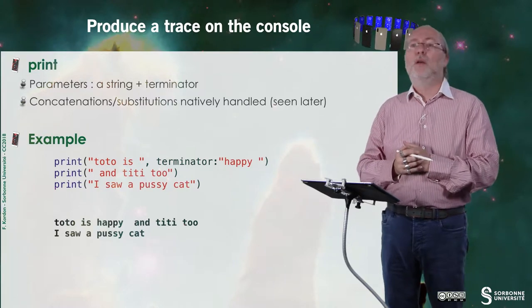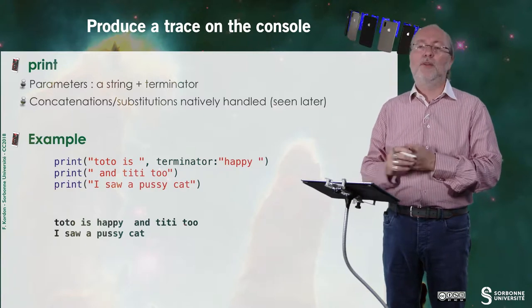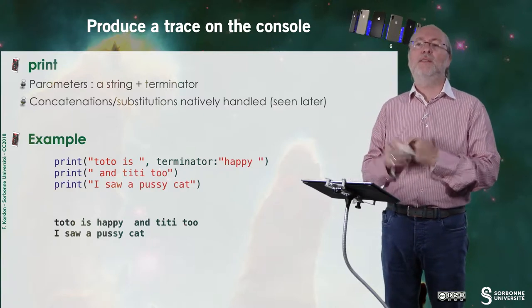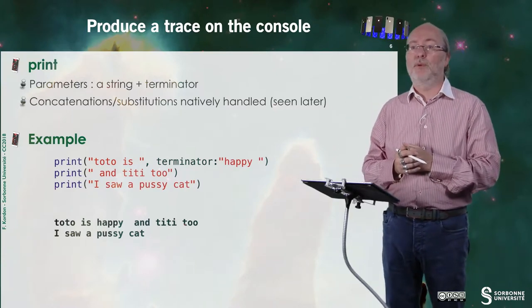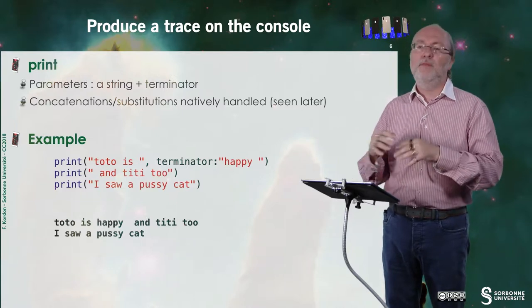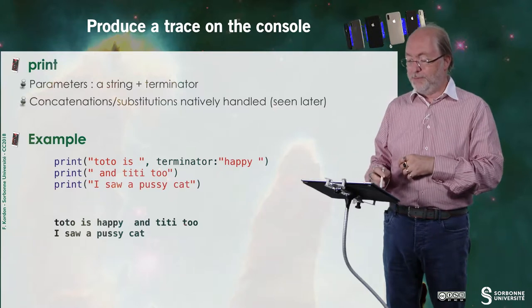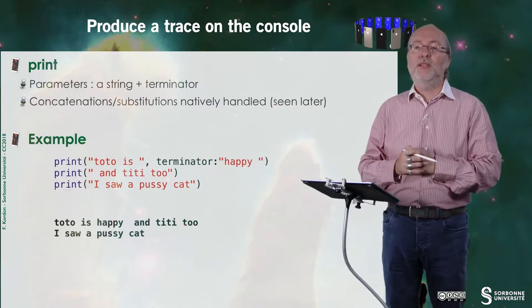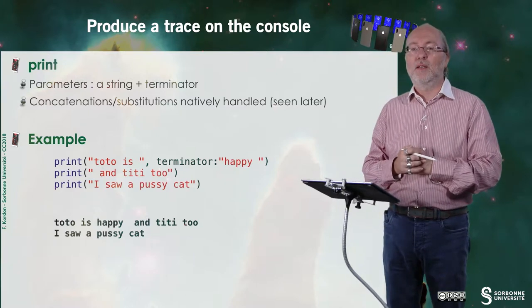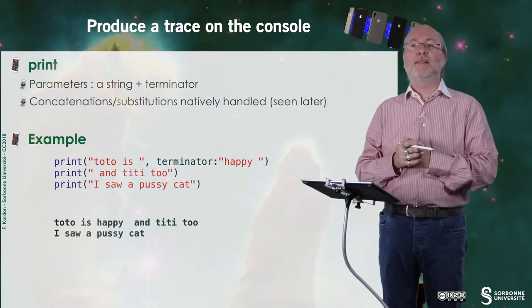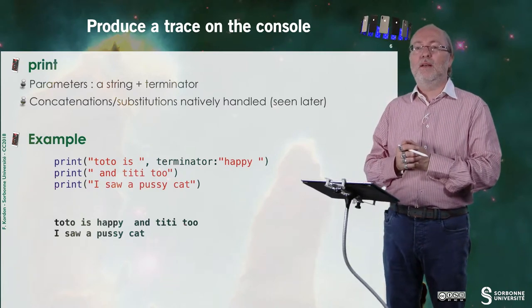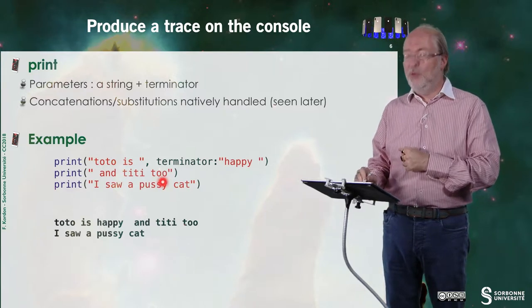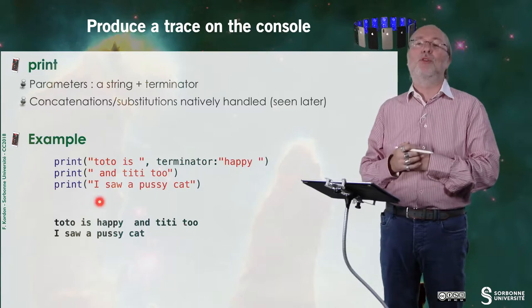So you have the print instruction. Print displays something in the console. It takes two parameters: a string and a terminator. The terminator states whether you have a carriage return or not. For example, here I say print 'total is' and state that the terminator is 'happy', so 'happy' will be appended at the end of the sentence. Here I say print entity two and the default terminator is a carriage return. There is nothing more complex to say about this instruction.